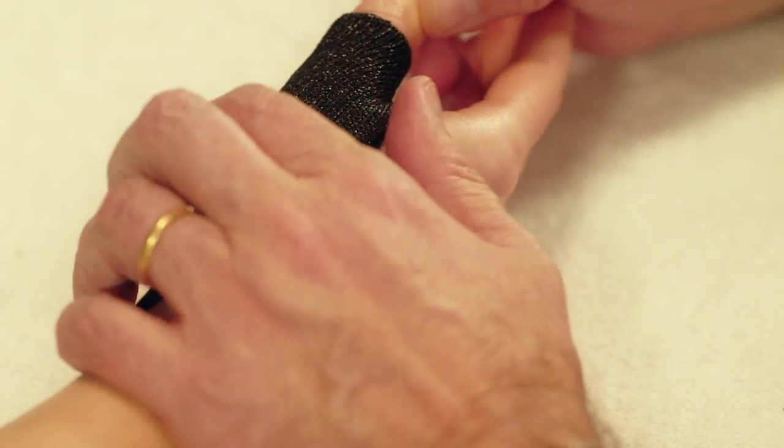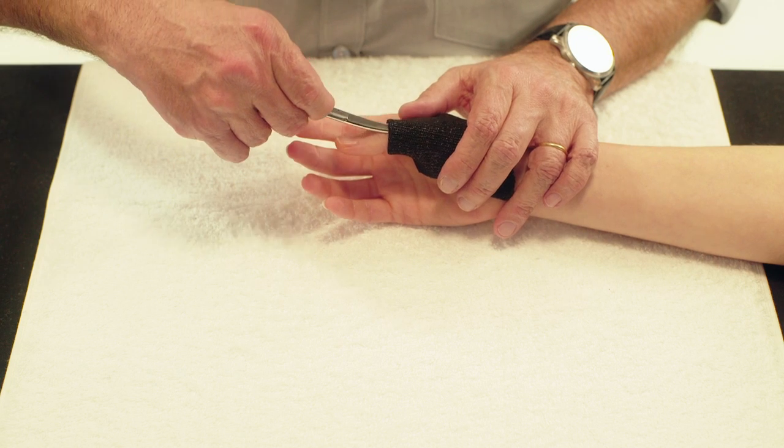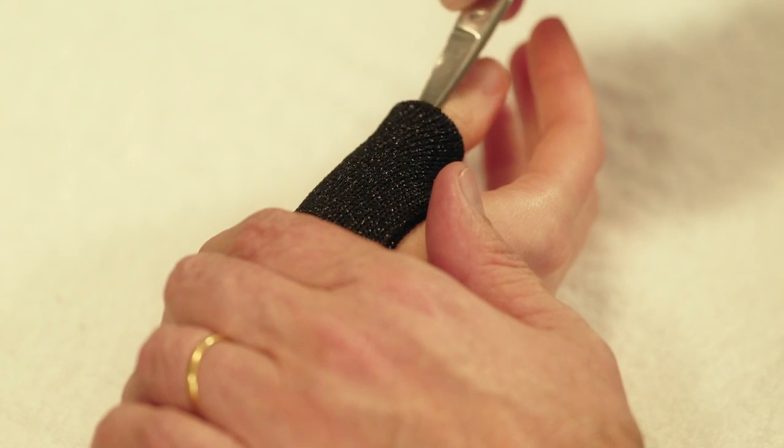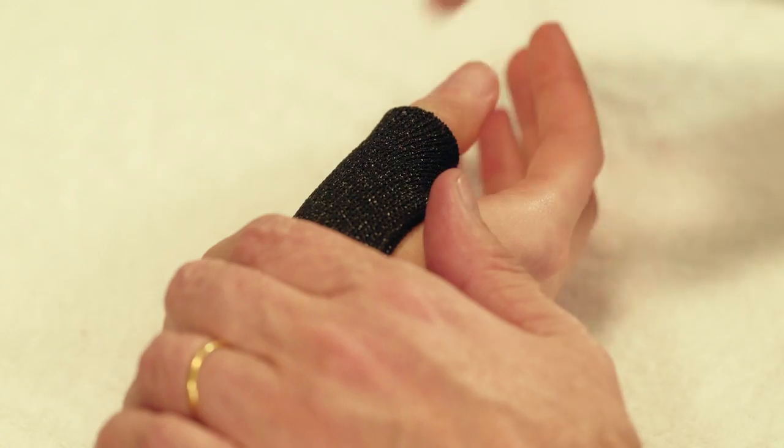Position the thumb in opposition. Use curved scissors to broaden the thumb space in order to make removal of the orthosis easier.